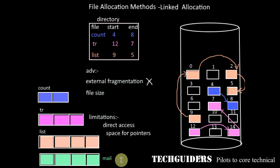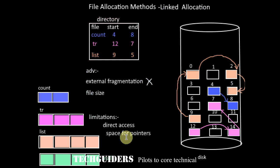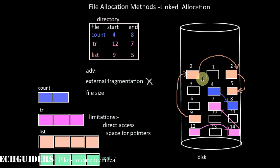Another limitation is the space required for the pointers. In each block, a portion has to be reserved for the pointer. Thus, a major portion of the disk space has to be used for the pointer rather than for information.